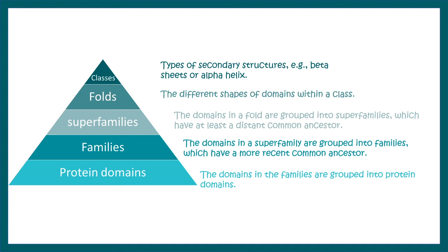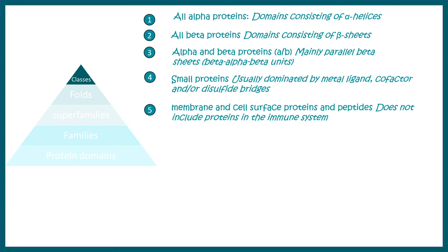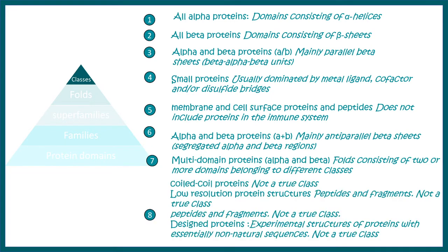Let's try to understand this in a pictorial manner. All of these categories are subdivided into subcategories. Classes are subdivided into eight subcategories: one class is all alpha proteins that have only alpha helices in their secondary structure, all beta proteins, a combination of alpha-beta, small proteins, proteins dominated by metal ligands, membrane or surface proteins, and several others. Similarly, fold and superfamilies also have subdivisions, but we don't really need to go to that level of detail in this video.